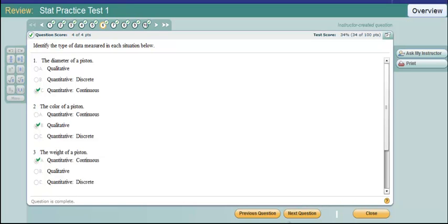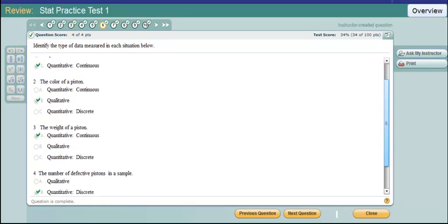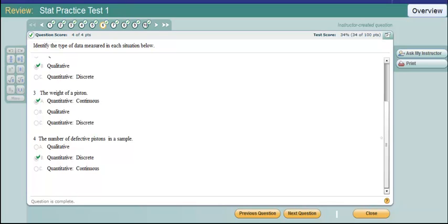Identify the type of data measured in each situation below. The diameter of a piston is quantitative because it's a number answer and it is continuous. All real values within a certain range are possible there. The color of a piston however is qualitative. It is only an attribute. The weight of a piston is quantitative and it's continuous. The number defective pistons in a sample is just a count and that's going to be quantitative but discrete.